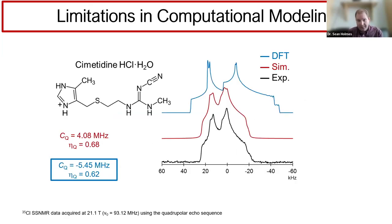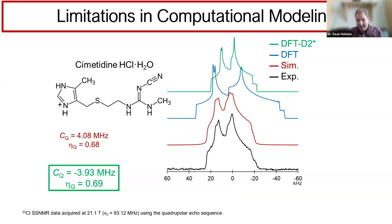Returning to cimetidine hydrochloride monohydrate: using standard DFT without the new dispersion interaction gives a very large overestimation of CQ. However, with the new geometry optimization and calculated EFGs, we get a pattern that is a much closer representation of the experimental pattern. The value of CQ is now 3.9 megahertz, in close agreement with the experimental value of 4.1 megahertz.